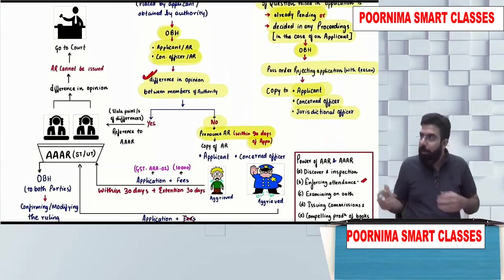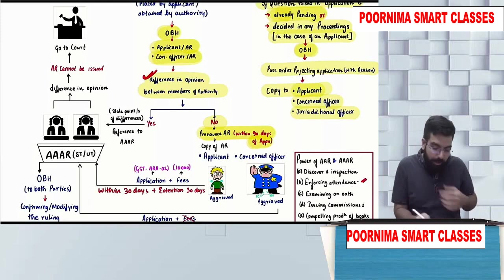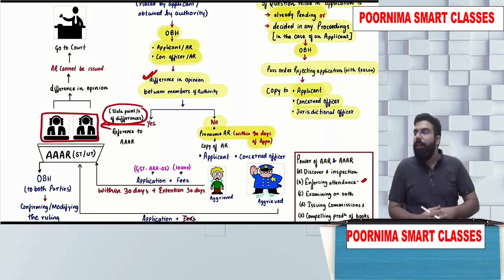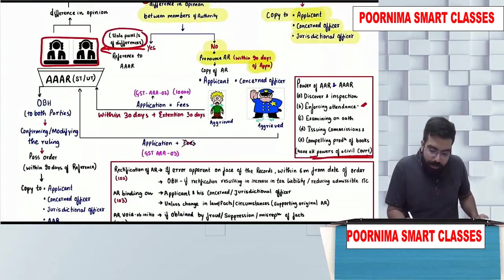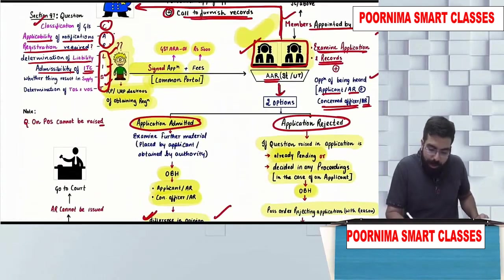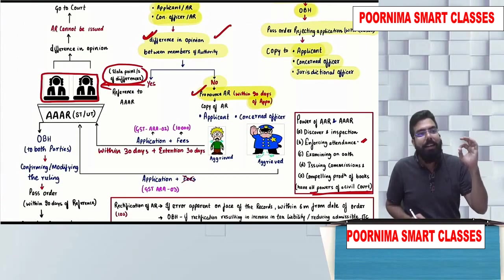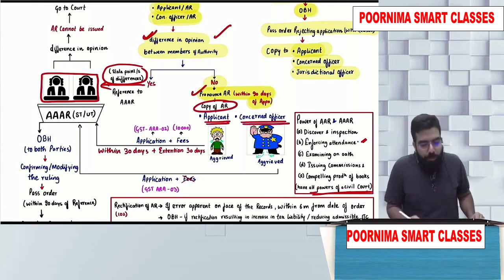If both the members have a difference of opinion, they will state the point of difference and refer the application to the AAAR — Appellate Authority for Advance Ruling. If they do not have a difference of opinion, they pronounce the advance ruling within 90 days, and a copy of the advance ruling shall be given to the applicant and his concerned officer.